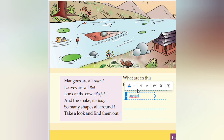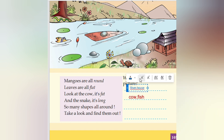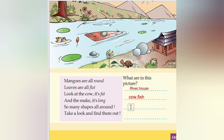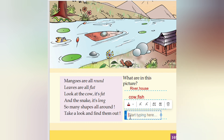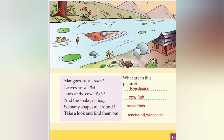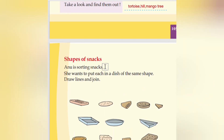This is what we can write here. We should put everything in this picture. Fish we can write, snake we can write, birds — okay. So we can write: tortoise is there, hill, tortoise. Mango tree is also there. Coming to the next page — shape of snacks.